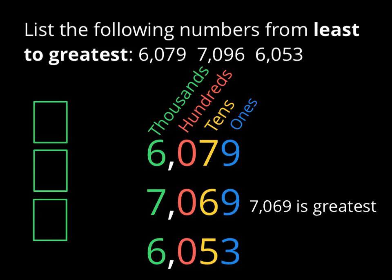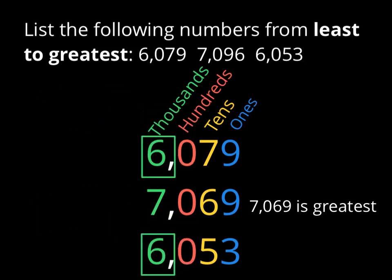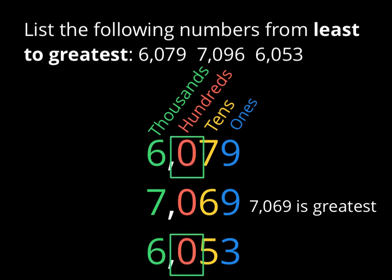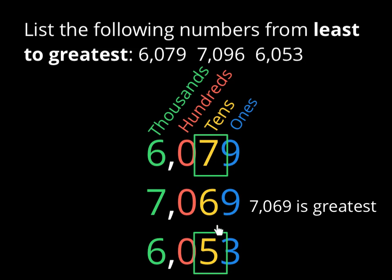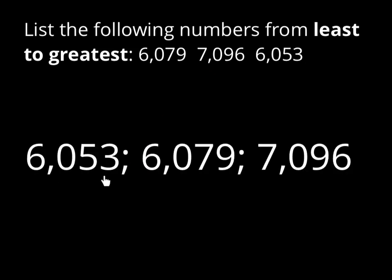To continue, we're going to keep comparing, but now we no longer need this box because we've already eliminated that number. Knowing that the two remaining numbers both have sixes in the thousands column, we have to compare the hundreds column. These zeros are the same, so I'm going to go to the tens column. There we see that this seven is greater than this five. So if they're asking us to order from least to greatest, we now know that 6,053 is the smallest. And remembering that 7,096 is the greatest, that means 6,079 is our middle number. From least to greatest: 6,053 is the least, 6,079 is in the middle, 7,096 is the greatest.